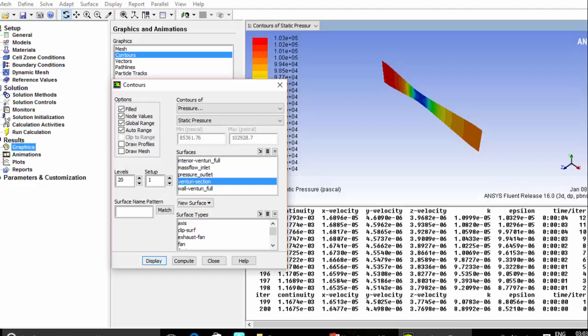Now expand the graphics option from the results tree. Click the contours of pressure, static pressure, at venturi section which is the symmetry of the VentureMeter. Click display to view the pressure distribution at the symmetry of the VentureMeter.